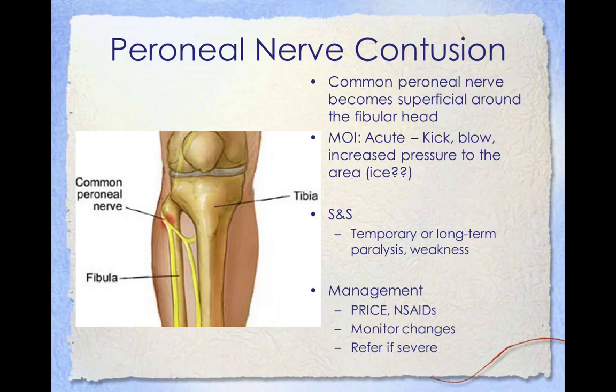The peroneal nerve is found on the outside part of the lower knee and is responsible for transmitting impulses to and from the leg, foot, and toes. When damaged, the muscles innervated by this nerve may become weak and sensation may be lost, potentially causing foot drop — the inability to raise the foot upward. A peroneal nerve injury is commonly caused by a kick, blow, or increased pressure to the area, a broken leg bone, knee injury, surgery to the leg or knee, or ankle injuries. Because the nerve is superficial, it can even be irritated by placing ice on an athlete's knee. Symptoms may include numbness or tingling in the lower leg, pain in the foot or shin, foot weakness, and a prickling or pins and needles sensation. Management includes PRICE, NSAIDs, and monitoring the athlete for changes; if symptoms do not improve or remain severe, refer the athlete.